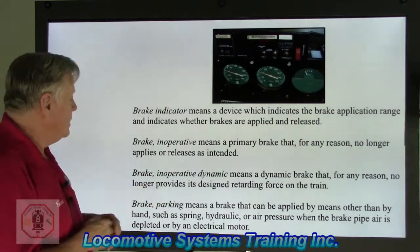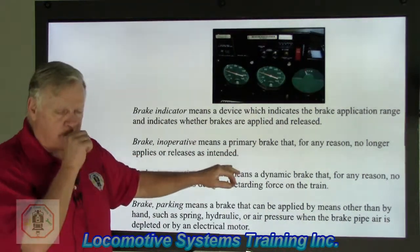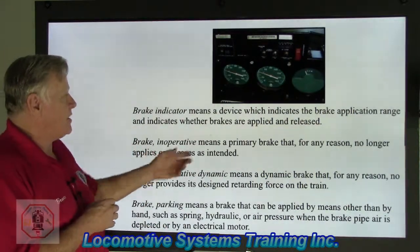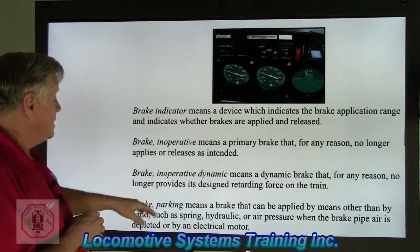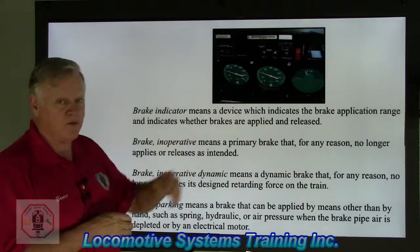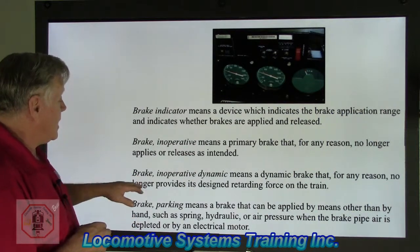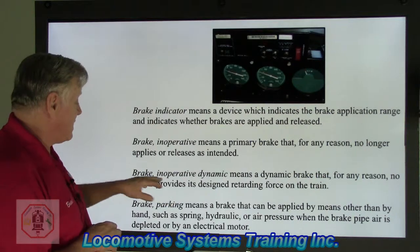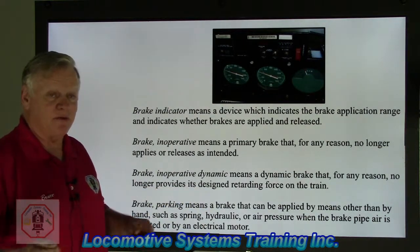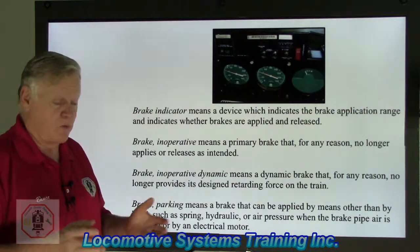Brake inoperative, or inoperative brake, means a primary brake that for any reason no longer applies or releases as intended. If brake cylinder pressure doesn't reach expected values — say only 45 pounds instead of 72 when applying the independent brake — there may be a defect or a different braking system involved. Inoperative dynamic brake means a dynamic brake which for any reason no longer provides the designed retarding force. If one or two out of three locomotives have non-functioning dynamic brakes, that becomes a federal defect and must be written up to get fixed.